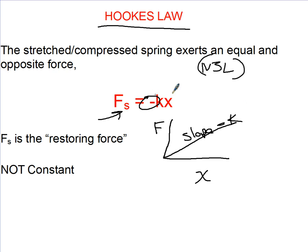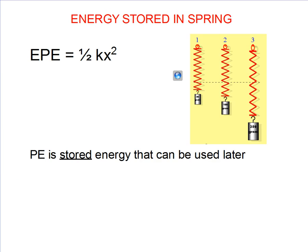And again, this negative sign just gives us the direction of the force. Now, there is energy stored in springs. If you go to the Colorado PhET, this is a really cool demo. The energy stored in a spring is equal to one-half KX squared.